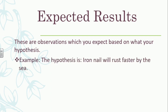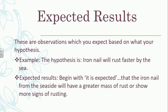Since our hypothesis is that the iron nail will rust faster at the sea, your expected results should begin with 'it is expected,' because it's not a definite thing — you're just expecting it. So you would write: 'It is expected that the iron nail from the seaside will have a greater mass of rust or show more signs of rust.' These are observations you're expecting to see based on your hypothesis.